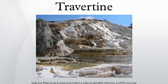Travertine is often used as a building material. The Romans mined deposits of travertine for building temples, aqueducts, monuments, bath complexes, and amphitheaters such as the Colosseum — the largest building in the world constructed mostly of travertine. Other notable buildings using travertine extensively include the Sacré-Cœur Basilica in Paris, the 20th-century Getty Center in Los Angeles, California, and the Shell House in Berlin.